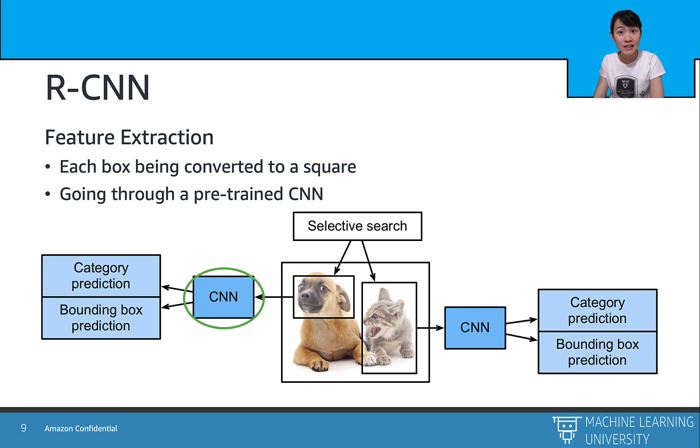So the next step is called the feature extraction, where we first warp each rectangle box into a square. And then we feed the square into a pre-trained convolutional neural network. And these neural networks can extract features from low level to high level, and in the end, feed it to the prediction layer.